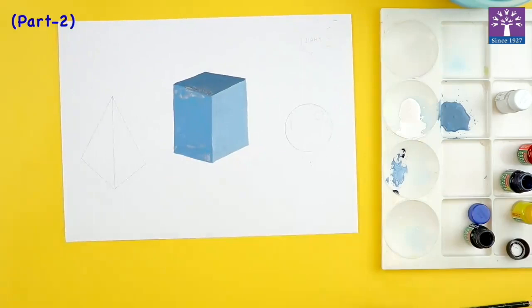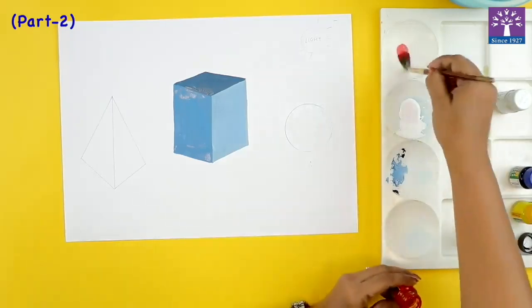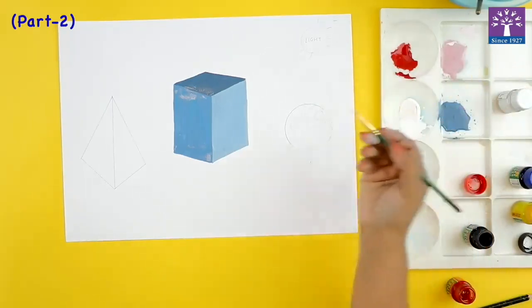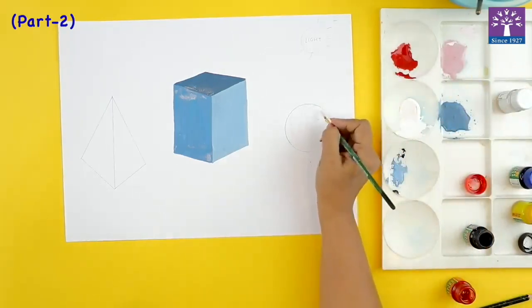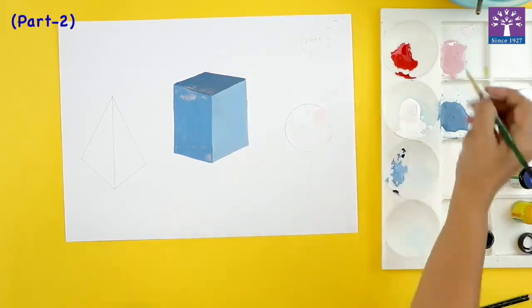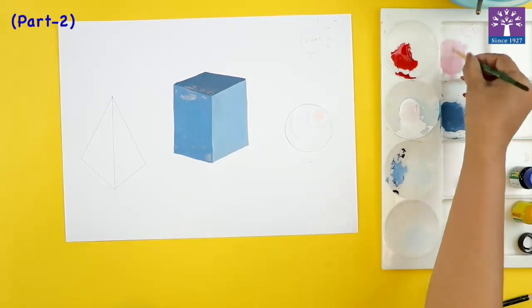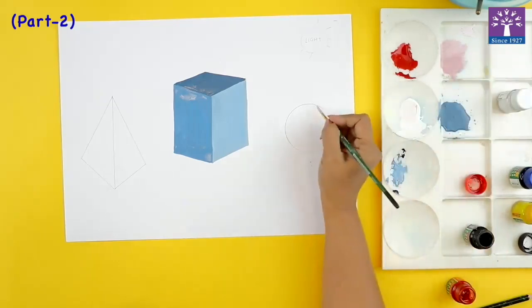I will show you how we are going to paint this red sphere. I am preparing my palette with red paint. So this is my first circle that I am painting which is almost white with a little hint of red paint. Then the next colour.